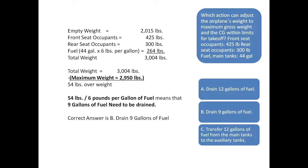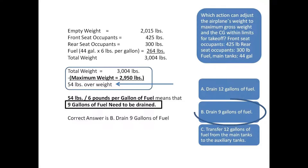As illustrated, the aircraft is 54 pounds over the max allowable weight of 2,950 pounds. 9 gallons of fuel would need to be drained from the aircraft, since a gallon of fuel weighs 6 pounds. Divide 54 by 6 to get the correct answer of 9 gallons of fuel. Therefore, the correct answer is B. More information about weight and balance can be found in Chapter 10 of the Pilot's Handbook of Aeronautical Knowledge.